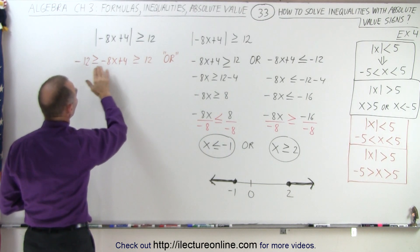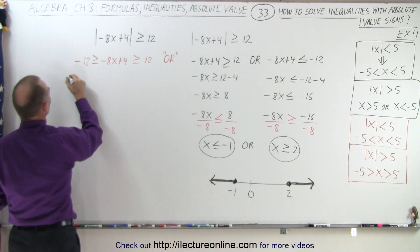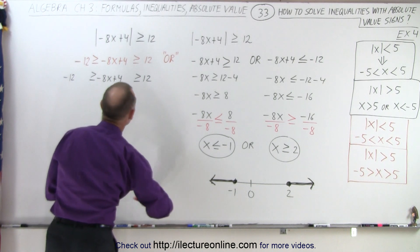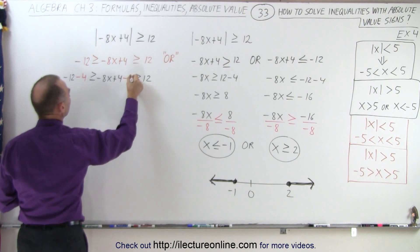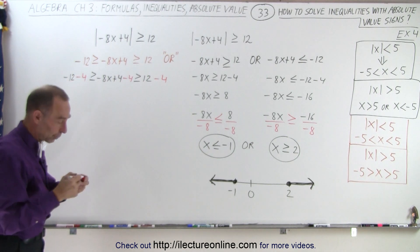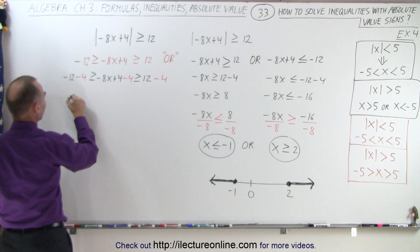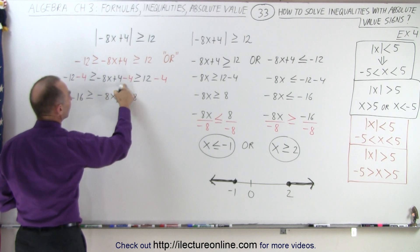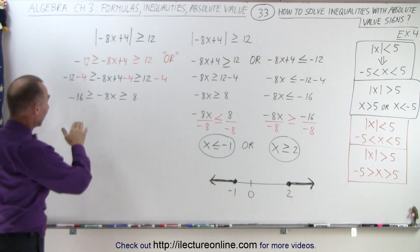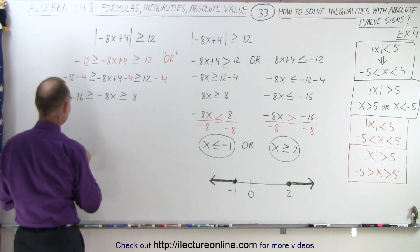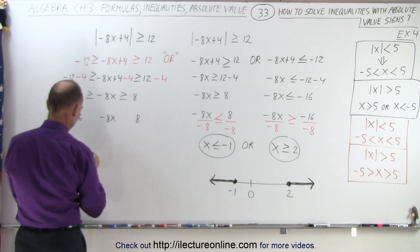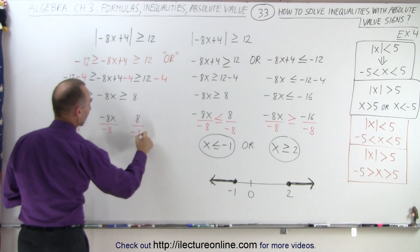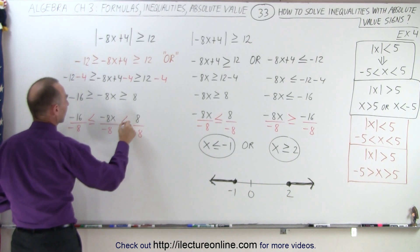First of all, we're going to subtract 4 from all three portions. So minus 12 greater than or equal to minus 8x plus 4 greater than or equal to 12, and in red you can see what we're doing — we're going to subtract 4 from that, 4 from here, and 4 from there. You have to do the same thing on all three portions of the inequality. Minus 12 minus 4 is minus 16, greater than or equal to minus 8x, greater than or equal to 8. Then finally I have to divide every portion by negative 8, and to do that I'll have to flip the inequality signs, so minus 16, minus 8x, positive 8. Notice I will flip the inequality signs around.